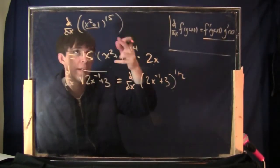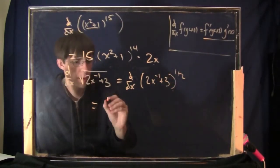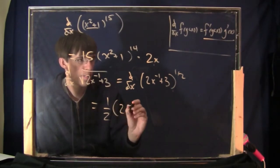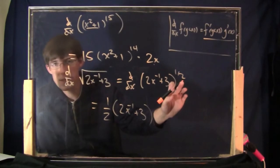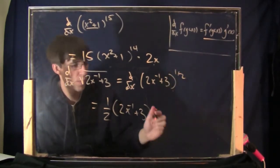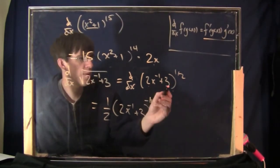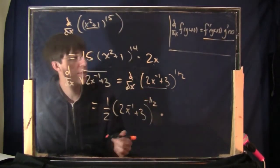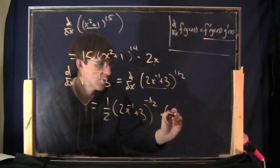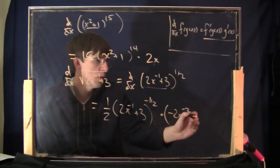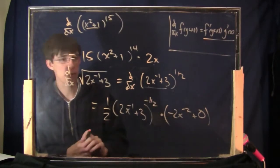This has the same format — some stuff and then an exponent. So we do the derivative by bringing the exponent down front, leaving the same thing on the inside, and decreasing the exponent by 1 — so that would be one-half minus 1, which is negative one-half. Then multiply by the derivative of the inside. The derivative of the inside: it's going to be minus 2x to the minus 2, and the derivative of 3 is 0. That's your answer.